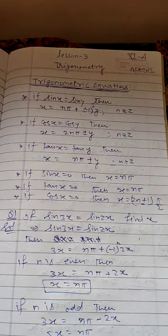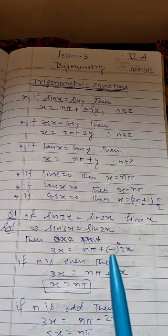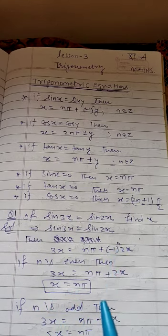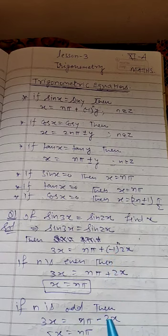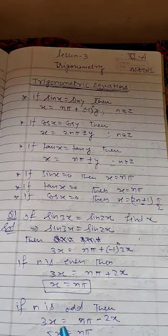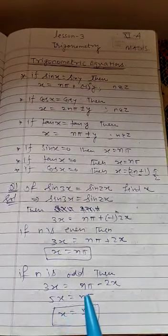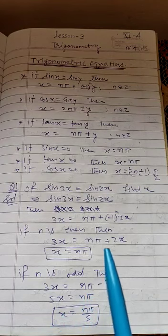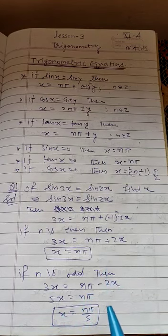In a similar way, if n is odd, then (-1) to the power of any odd number should be negative. So minus 2x will come, and this minus 2x will come to this side, giving 5x. So 5x equals nπ, and x equals nπ/5. This is the final solution. Now comes to next question.